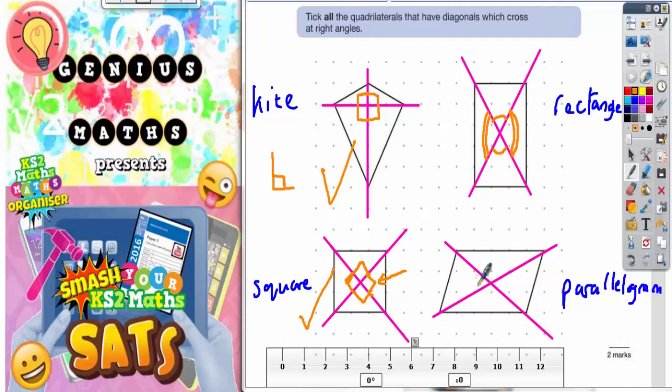For the rectangle, we've got an acute angle here and here, and an obtuse angle, which is the same as this, an obtuse angle, at the top and bottom of these diagonals here. So, to cut a long story short, tick all the quadrilaterals that have diagonals which cross at right angles.